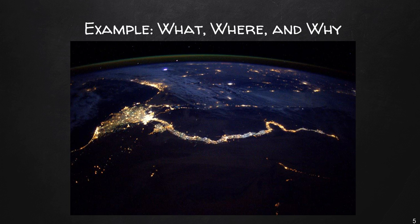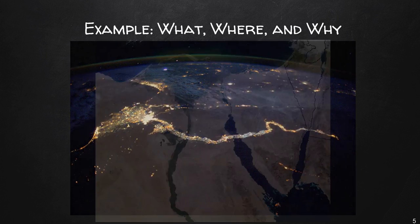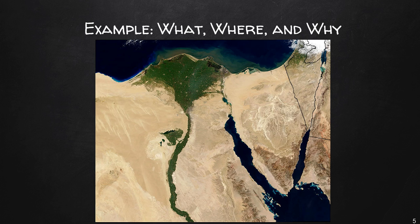The question 'what is where' refers to the physical aspect of geography. In this example, the 'what' refers to the population distribution in Egypt. Looking at this image, we can see that the majority of Egypt's population — a little over 93 million — live along the Nile River, indicated by these bright lights. The question 'why is it there' leads towards the human aspect of geography. Most of the people live along the Nile River because of its source of water. Without water, life could not exist, which answers why it's there. Here is a satellite image of Egypt, and we can clearly see that the Nile is the lifeline of the region.